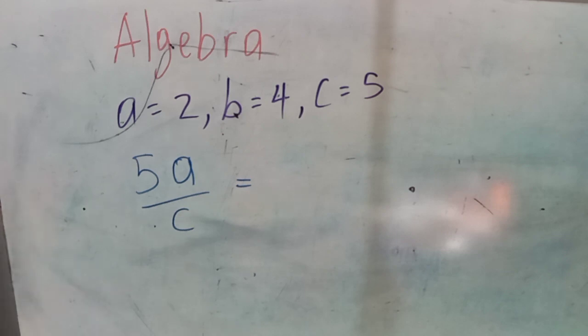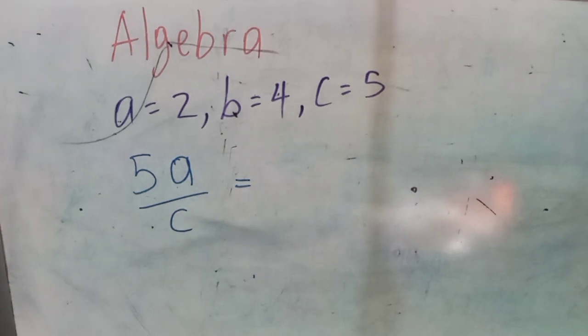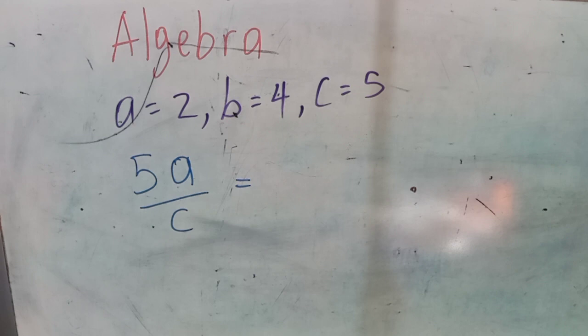In this particular case, we are given 5a divided by c, or over c. The first thing we need to do is to find the value of those variables, which we are given.